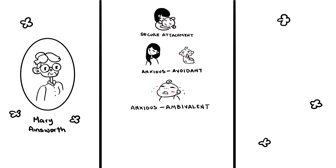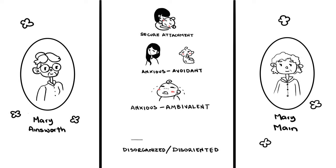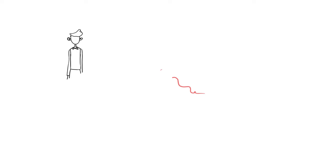A fourth type of attachment was introduced later by Ainsworth's colleague Mary Main. She brought in the disorganized-disoriented attachment. This is when a child avoids their parent or caregiver but is also clingy when the parent or caregiver leaves and comes back — the child looks dazed and disoriented.